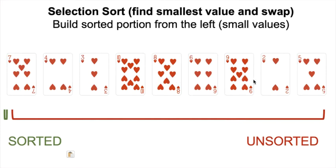I've taken the numbers 2 through 10 with these cards and randomly shuffled them into this unsorted array, and now we're going to apply selection sort to sort it one card at a time. The entire array is unsorted, so the first element in the unsorted portion is 7.